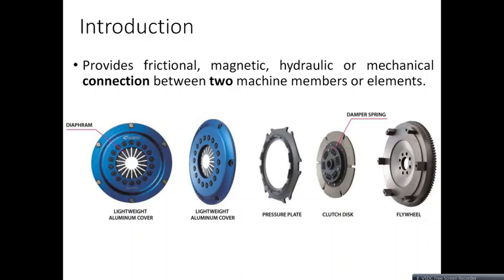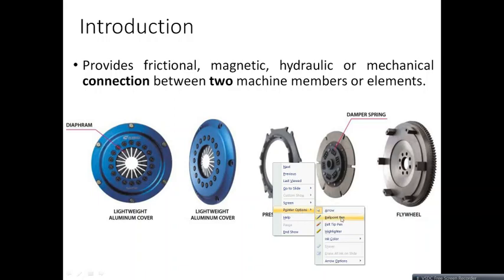The contact or power transmission can be achieved in different ways: with the help of frictional force, with the help of magnetic force, with the help of hydraulic means, or with the help of a mechanical joint. This connection is between two machine members — a driving member and a driven member.